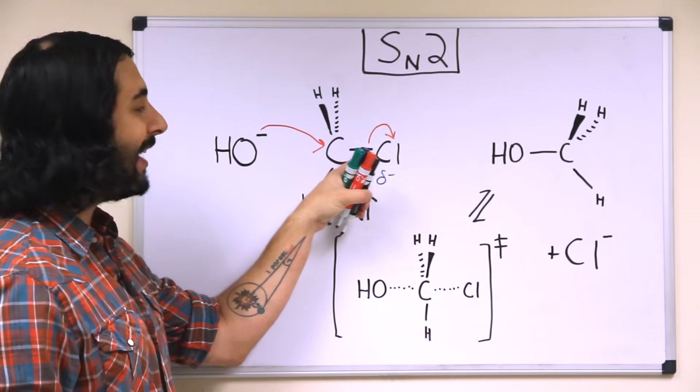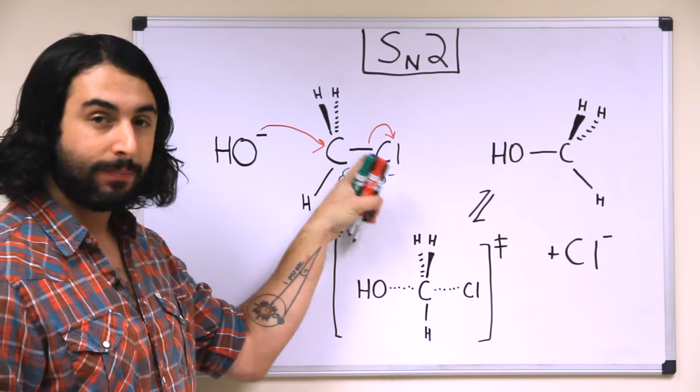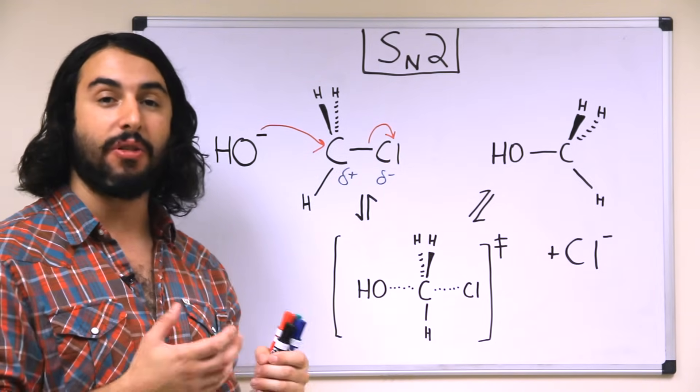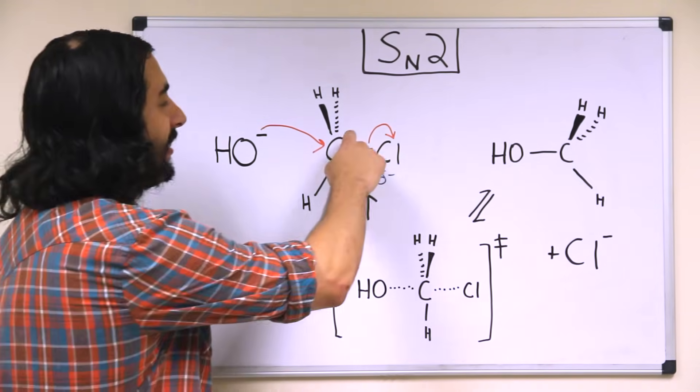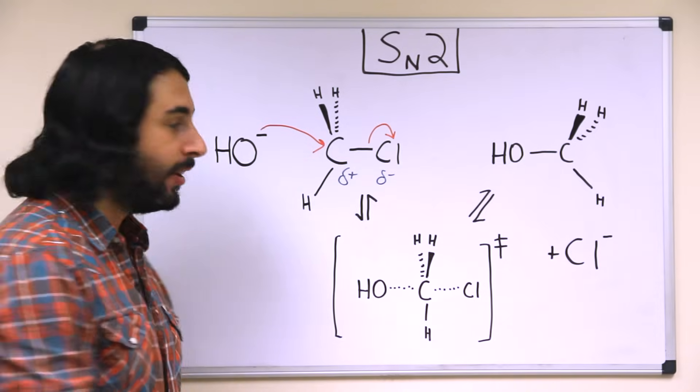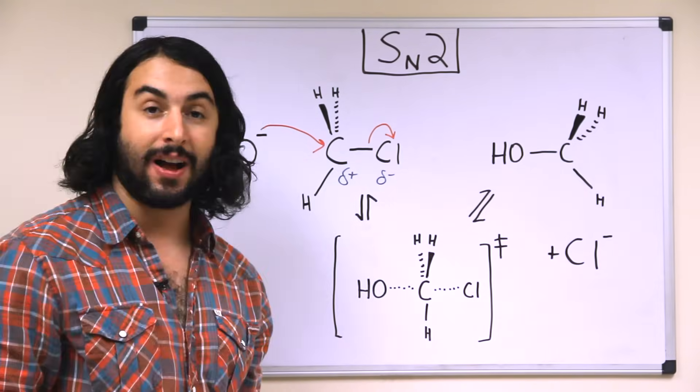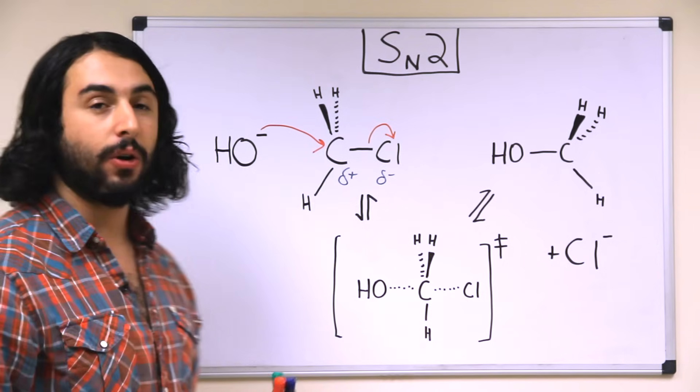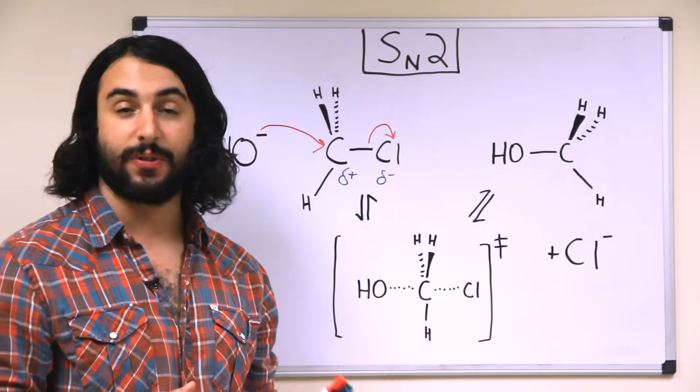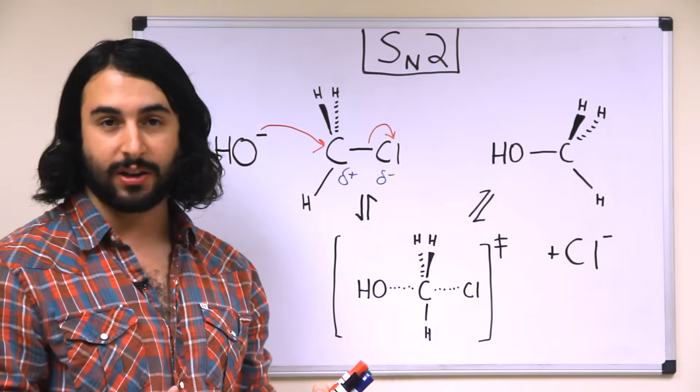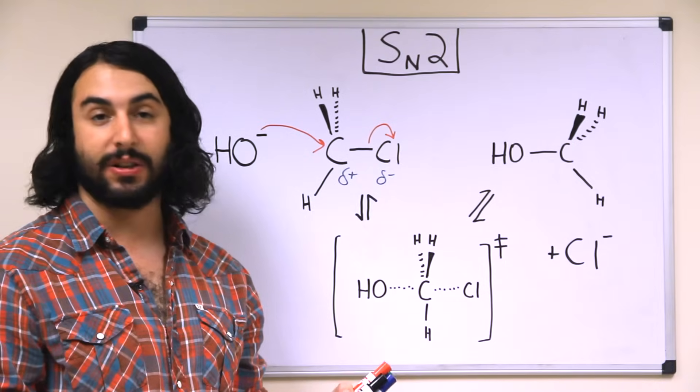This arrow is going to originate in the center of this bond, meaning that the two electrons in that covalent bond are going to leave with the chlorine atom, leaving the chloride ion. So the electron arrows must be drawn in a very specific way, and watch that on your exams. That's an easy place to lose a lot of points.